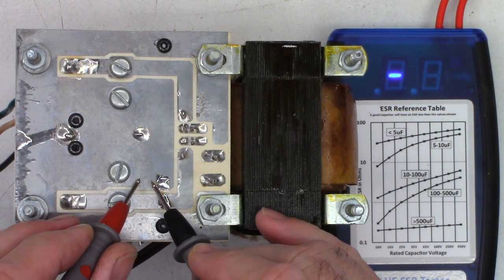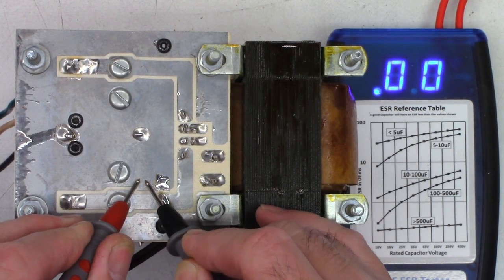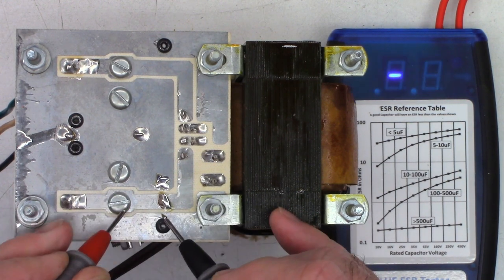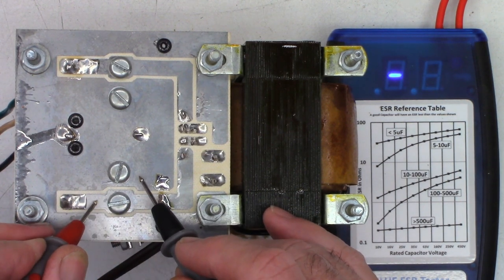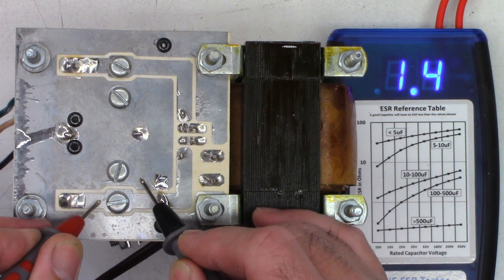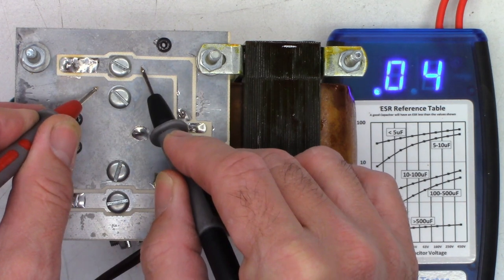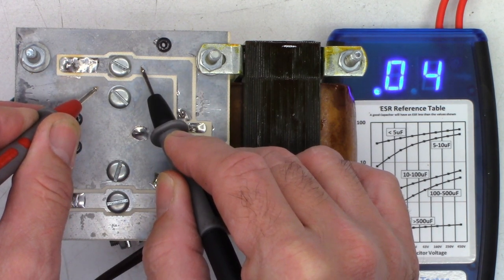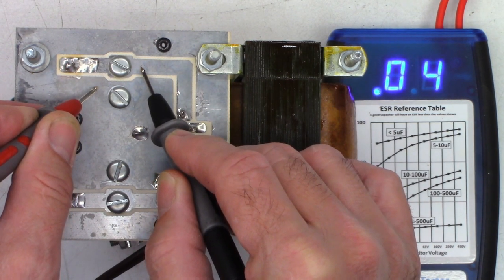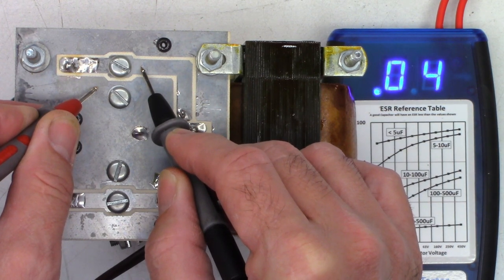We'll first verify lead integrity by shorting the two leads together and I see 0.0. That's perfectly fine. I'll test what is known as the bad cap and I see 1.4 ohms. That is totally bad. Next, we'll check the good cap and I see 0.04. I'd like to see 0.00 or even 0.01 at the absolute highest.